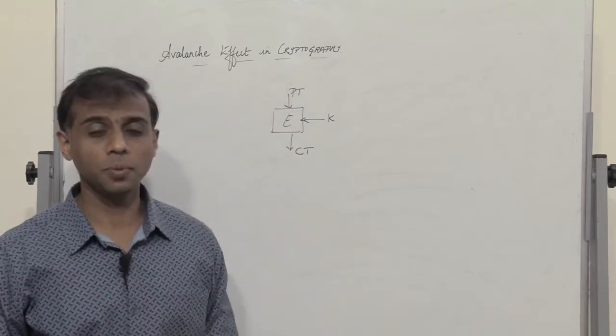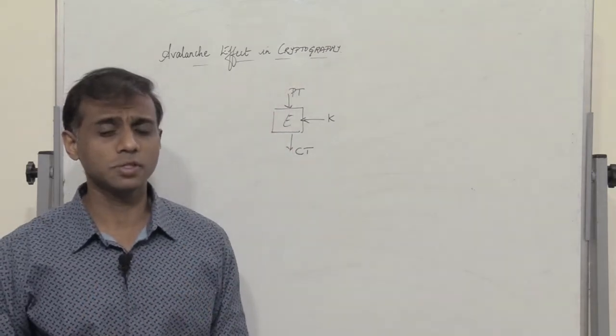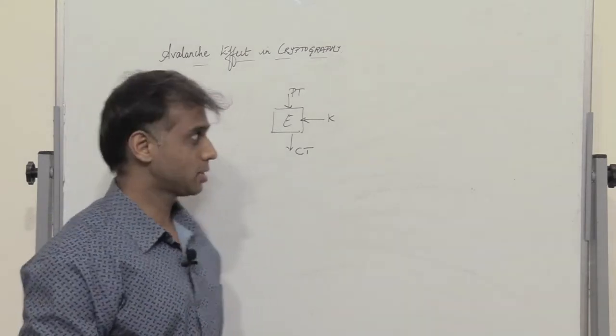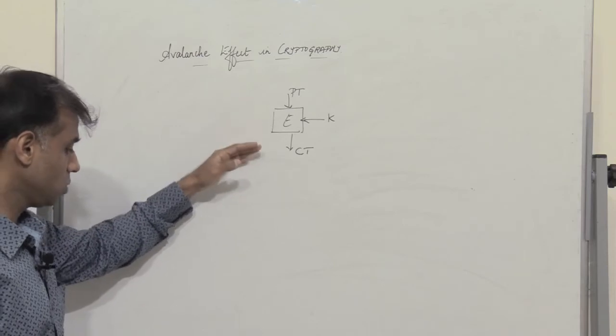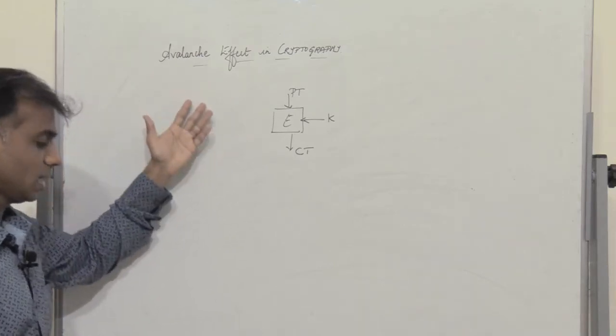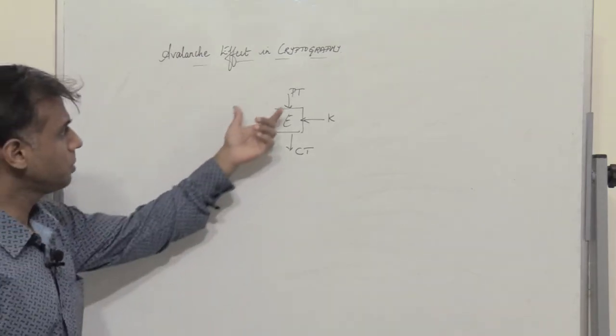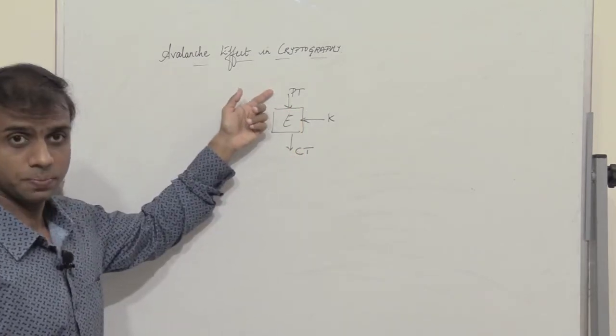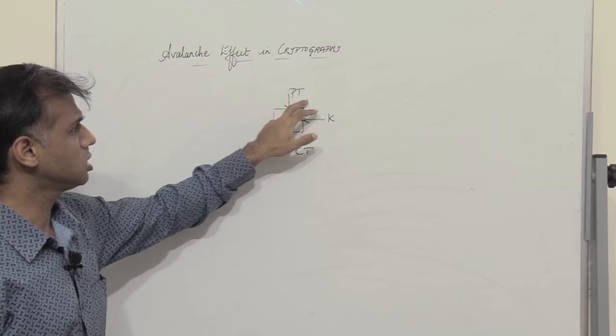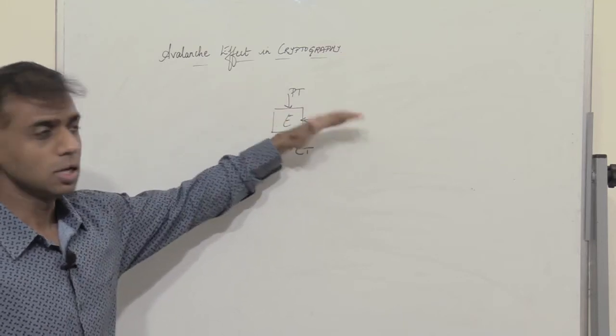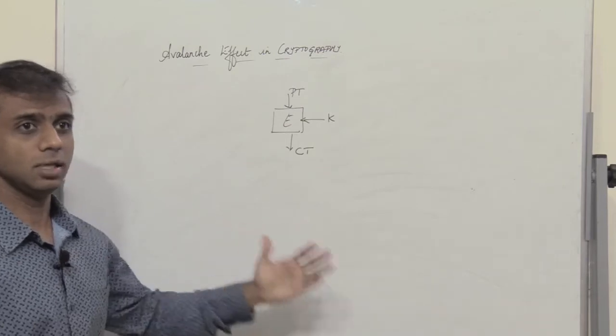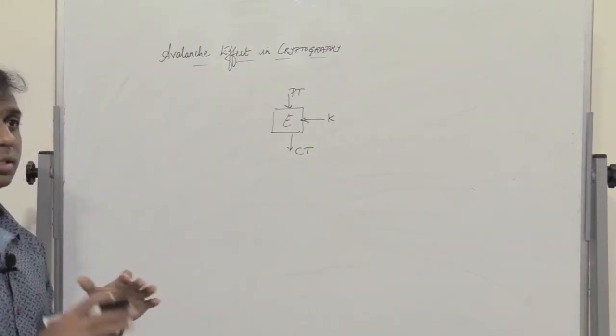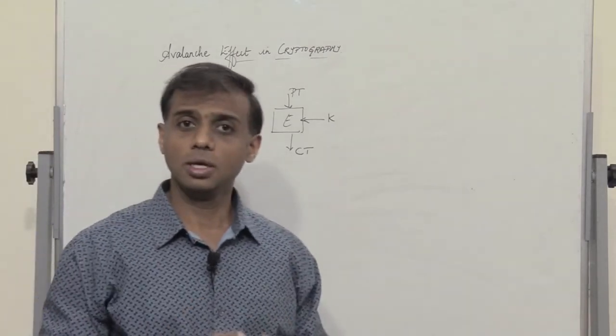Now why is this important? It is required for us to have a strong cipher, and it should be difficult for an attacker to predict the plain text by using various statistical analysis. So it should be very difficult for the attacker to predict the plain text, and hence any small change made in either the plain text or in the key should produce a significant change in the ciphertext.